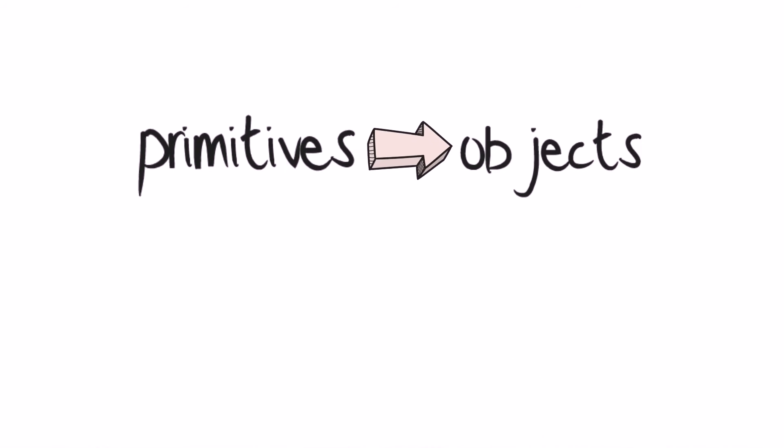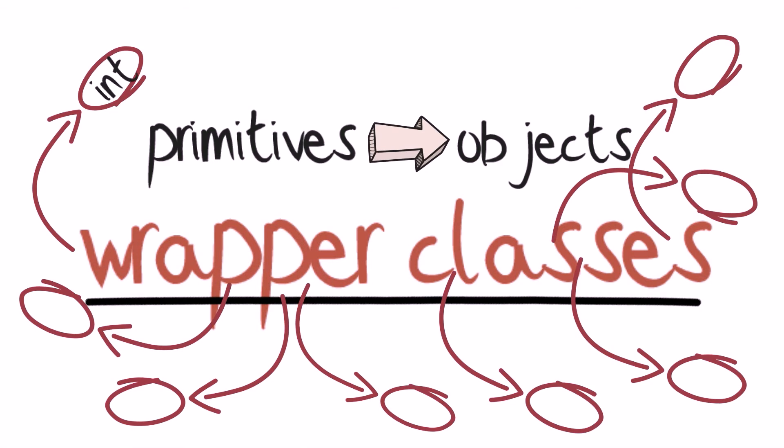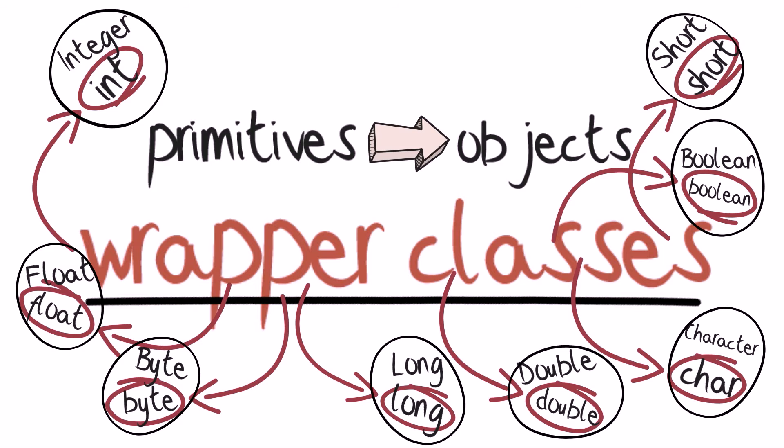The classes used for wrapping the primitive data types into objects are known as the wrapper classes, and each of Java's eight primitive data types has a class dedicated to it, such as Integer for int primitive, Float with a capital F for the float primitive, and so on.